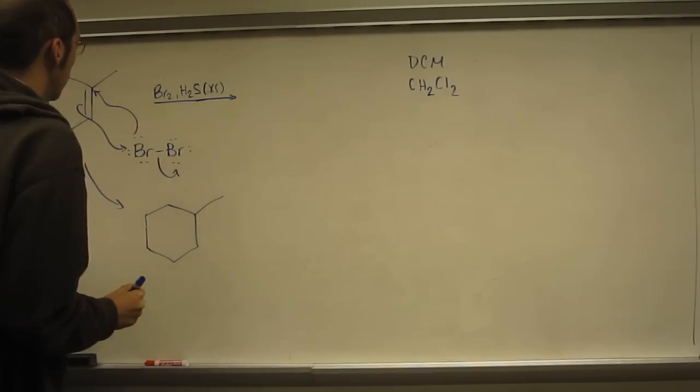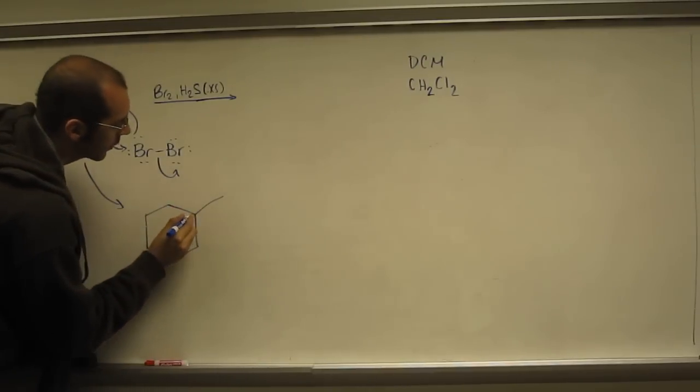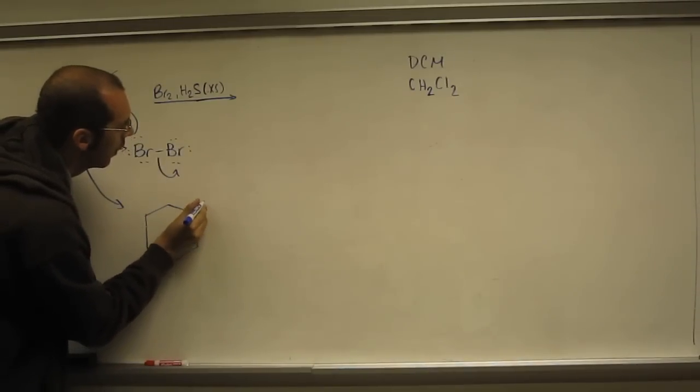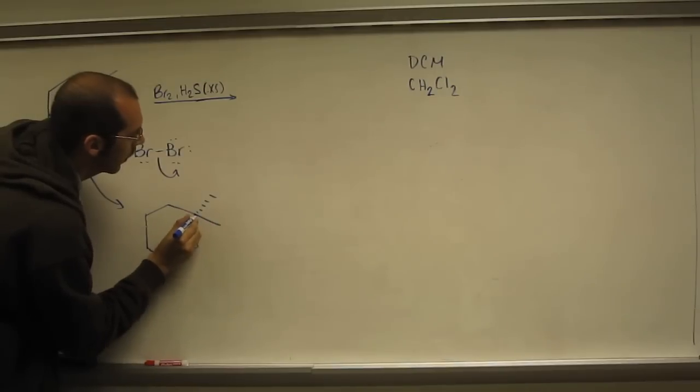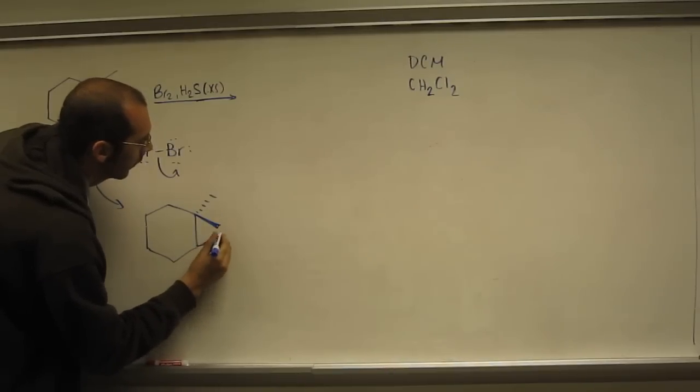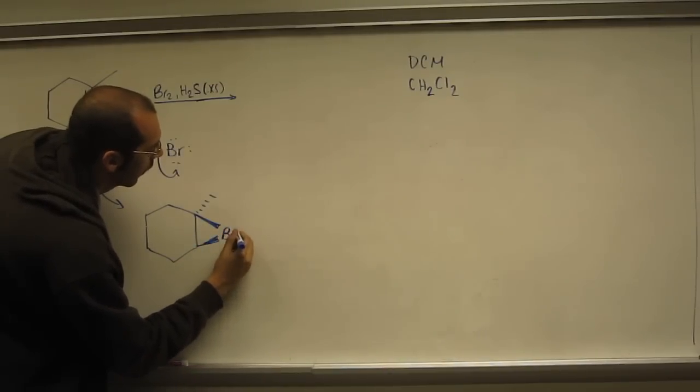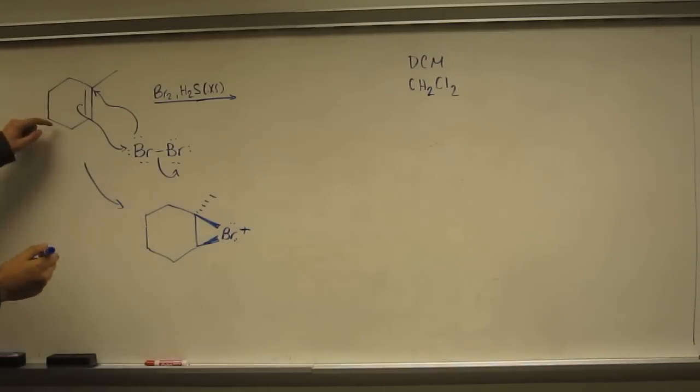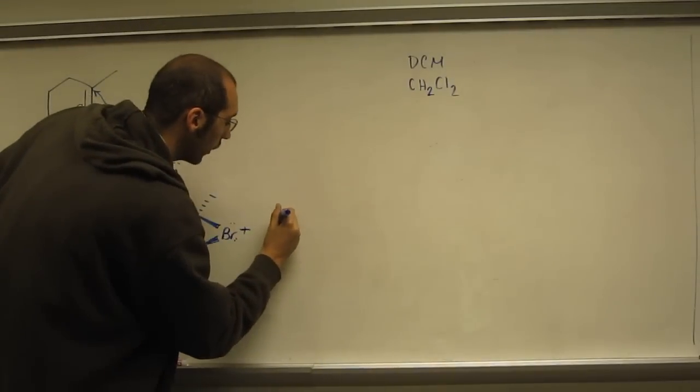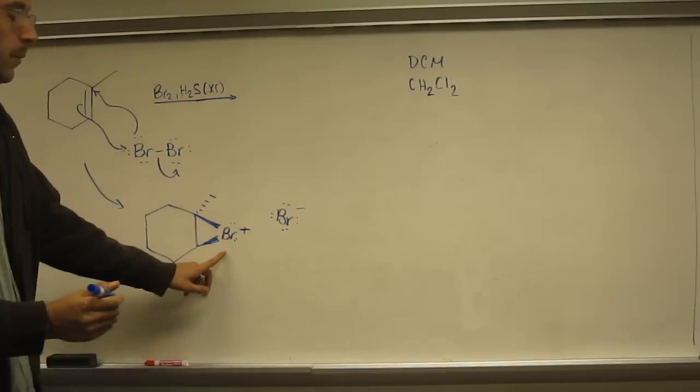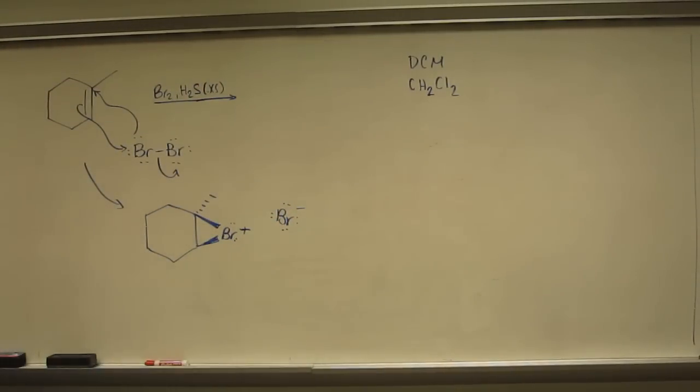And if you can't remember, does it have a charge? Does it not have a charge? Remember, both sides of the equation have to have the same amount of charge. So since you started with zero charge over here, bromine has zero, the alkene has zero, and you're making a negative charge. It's an easy way to remember, the bromonium ion has to have that positive charge.